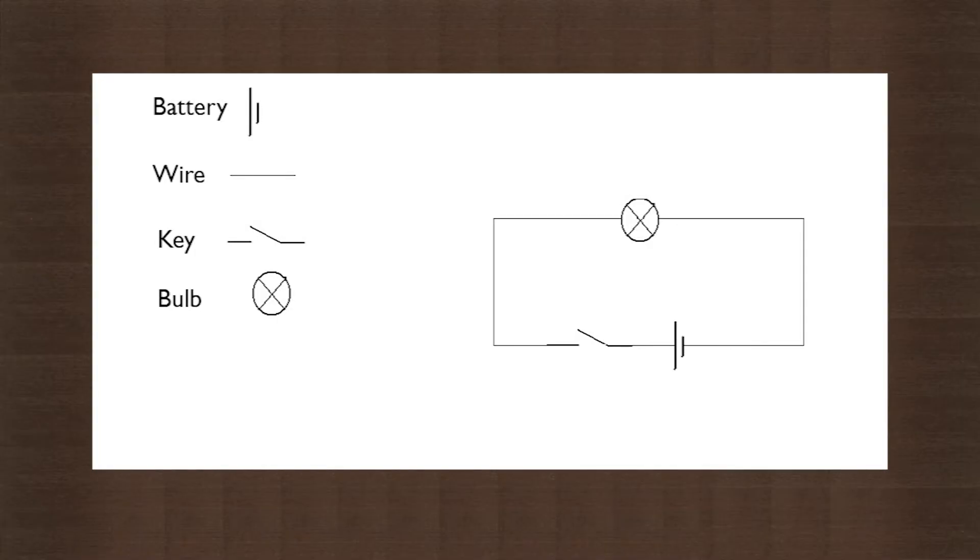An electric circuit diagram looks something like this, with symbols and lines. It is drawn so that we can know which instrument or appliances to be connected where and in what order.